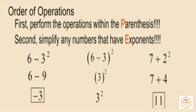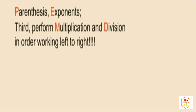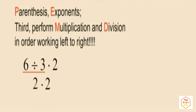Our third category is multiplication and division. Perform multiplication and division in order working left to right, whichever comes first. Notice this expression has a division and a multiplication. Division comes first working left to right, so you perform division before multiplication: six divided by three is two, and two times two is four. That is the correct answer.